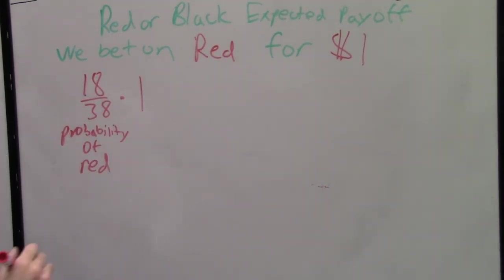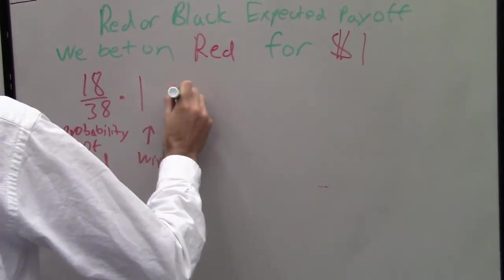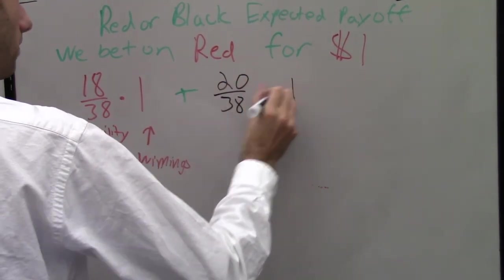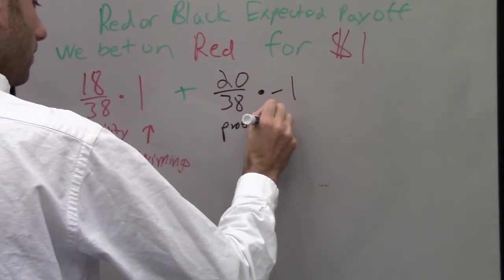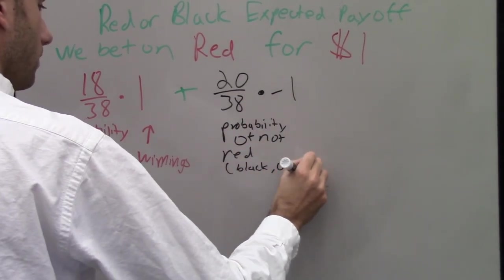Plus 20 over 38, the probability of not a red number, times negative 1, the payoff of losing. The expected payoff of this type of bet is once again, negative .053.